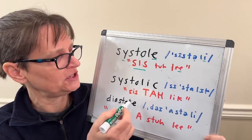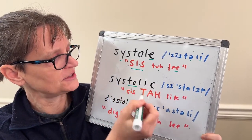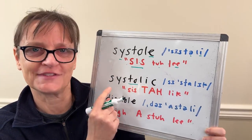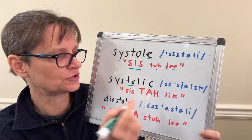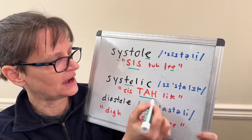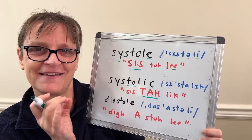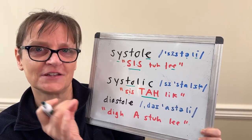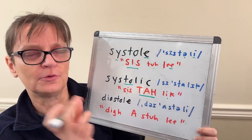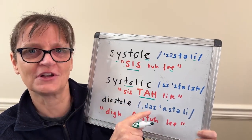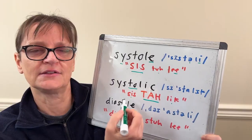Then when we change to systolic, our stress changes to the ta syllable, and our vowel sounds change. We still have cis in the beginning, but now it's going to be a little shorter. And because we're stressing on the syllable that has the O, it's now going to have the ah sound, systolic. And our last syllable will have a reduced ik sound — systolic. So systole and systolic.